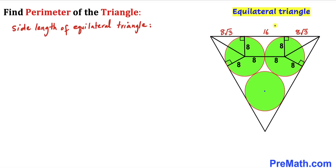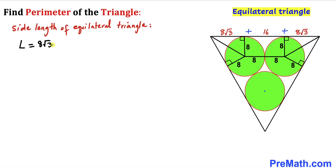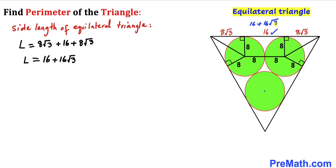The total side length of this equilateral triangle is found by adding the three segments together. So the length L equals 8 times square root of 3, plus 16, plus 8 times square root of 3. Combining like terms, we get 16 plus 16 times square root of 3. So this side length turns out to be 16 plus 16 times square root of 3.